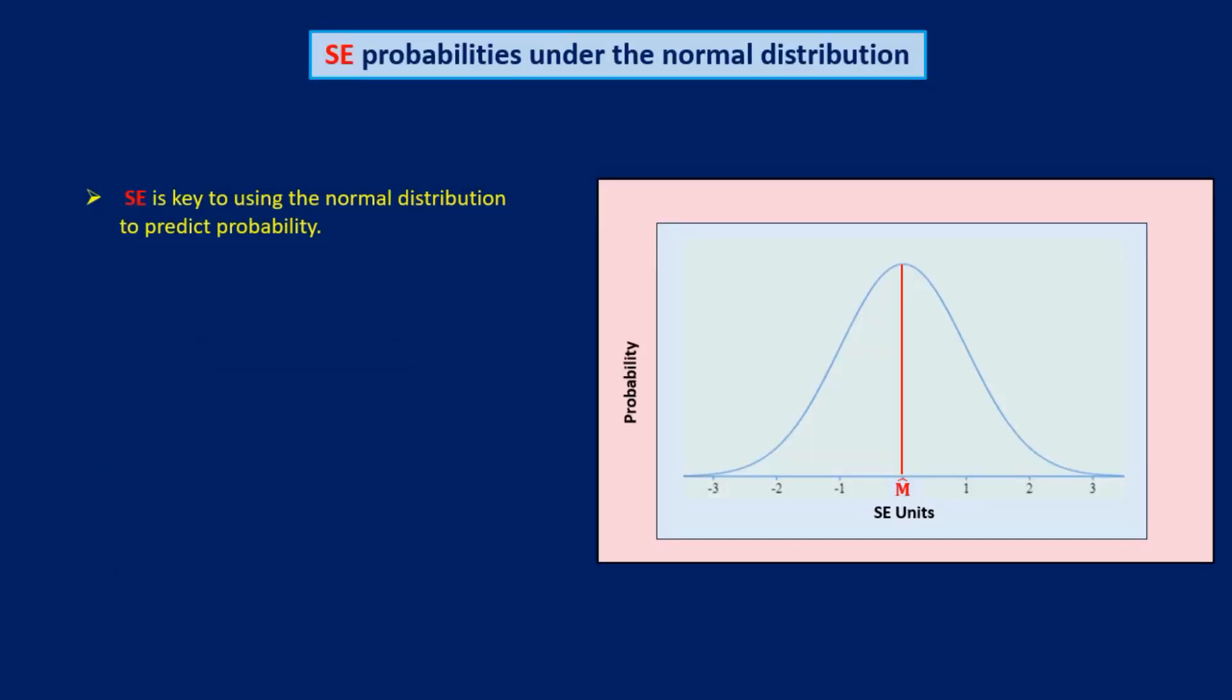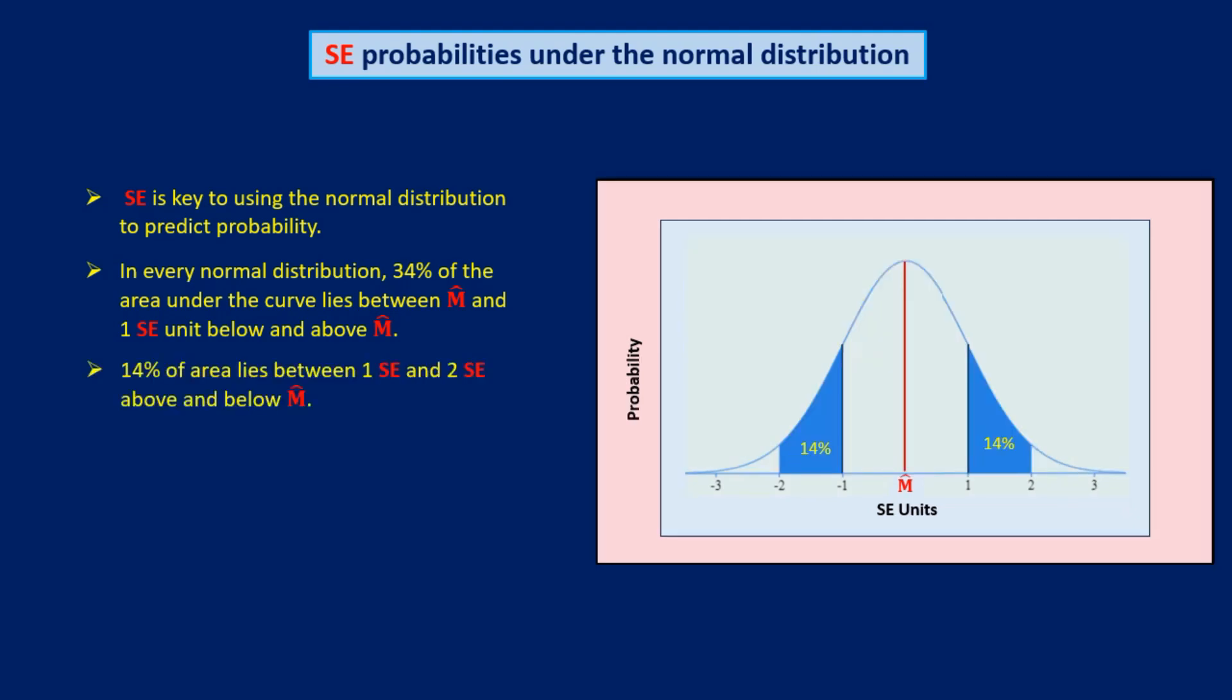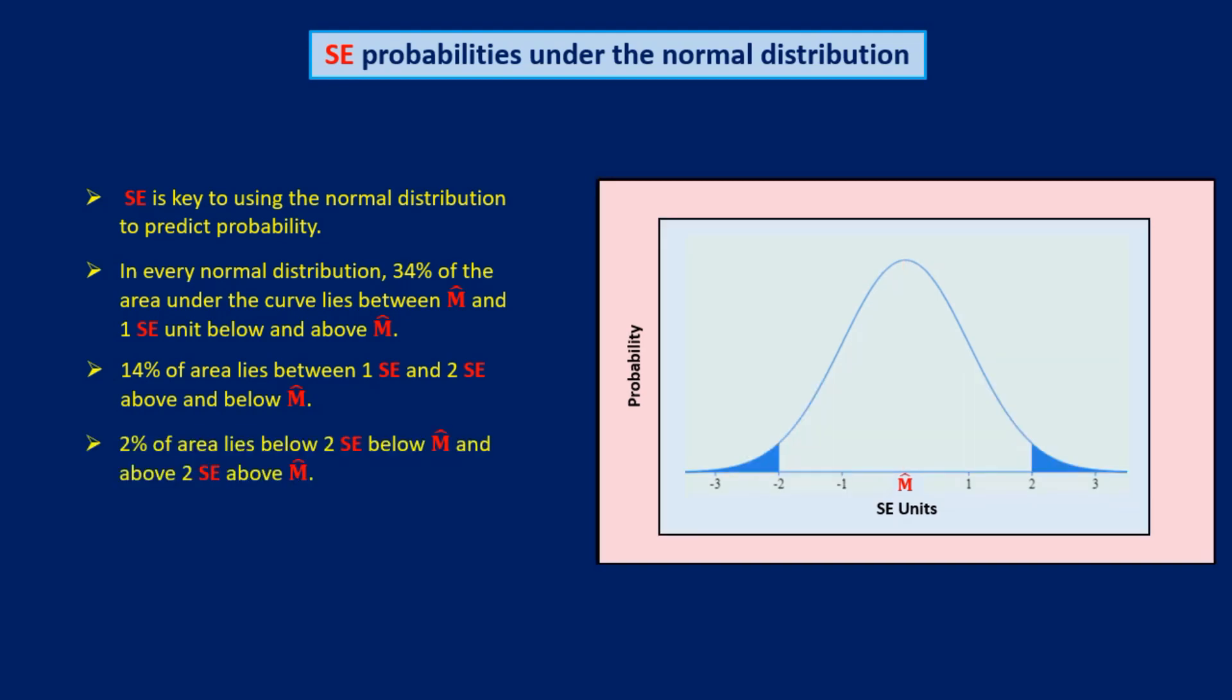SE is the key to using the normal distribution to predict the probability of outcomes for a random variable. This is because in any normal distribution, regardless of its mean or SE, 34% of the area under the curve lies between the mean and 1 SE unit on either side of the mean, 14% of the area lies between 1 and 2 SE units on either side of the mean, and 2% of the area lies above and below 2 SE units on either side of the mean. To repeat, these percentages are the same for any normal distribution, no matter what its mean or SE values may be.